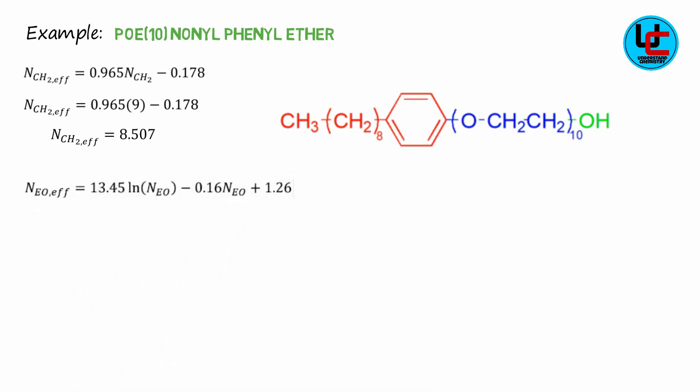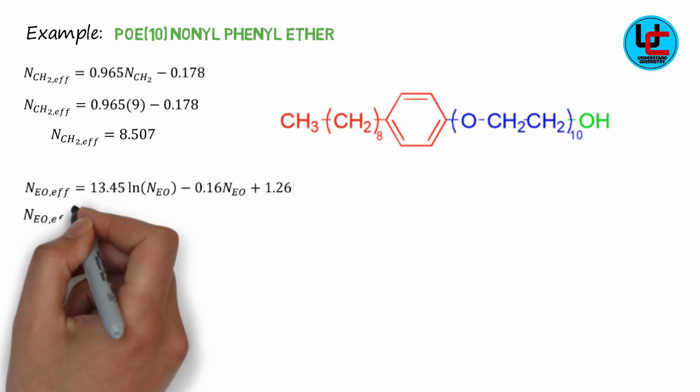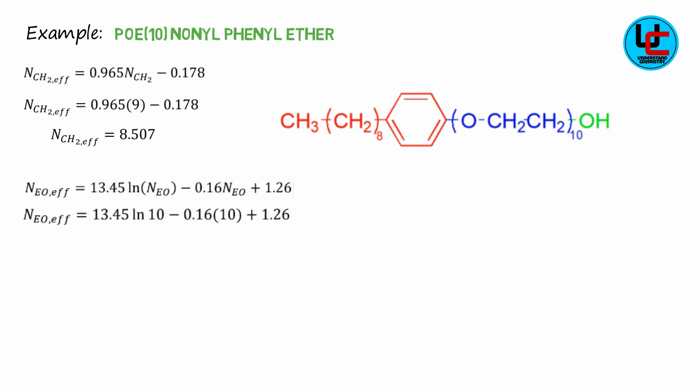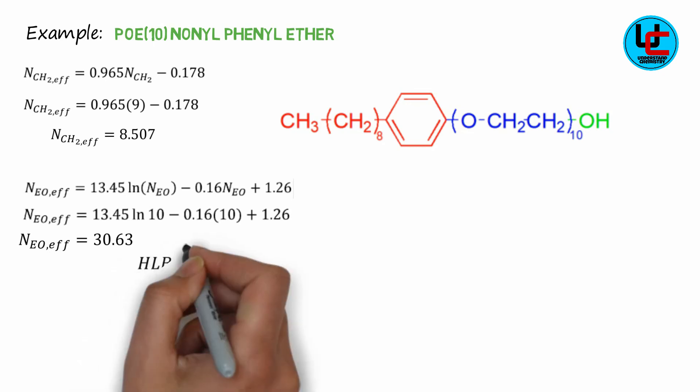For calculation of N-ethylene oxide effective, we use the formula where ethylene oxides are less than 50. By applying formula, we will get N-EO effective equal to 30.63.